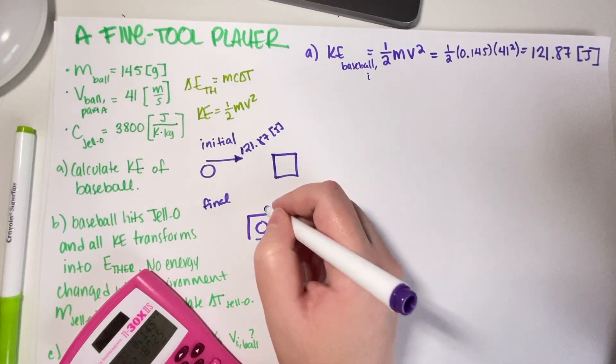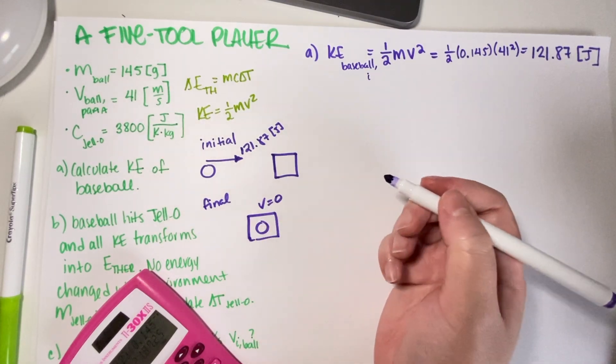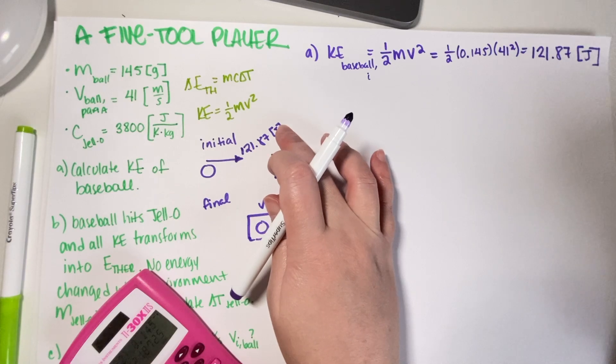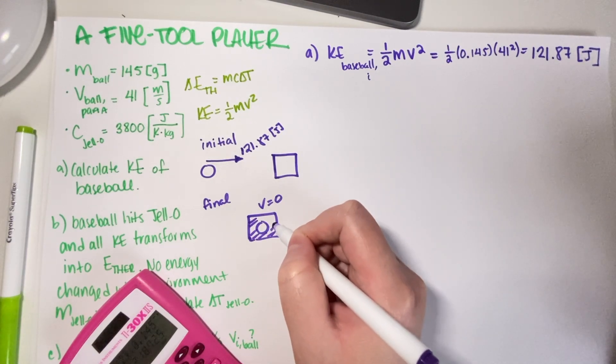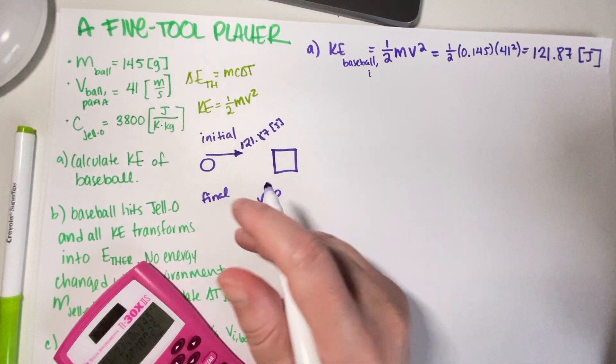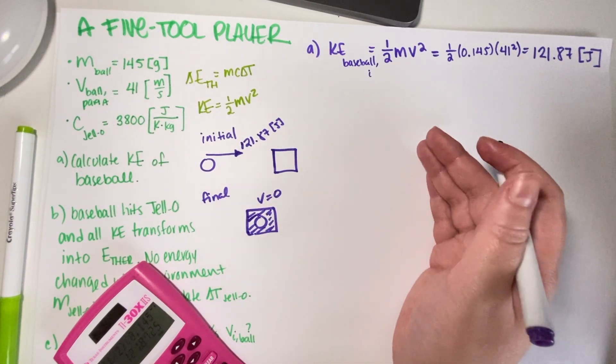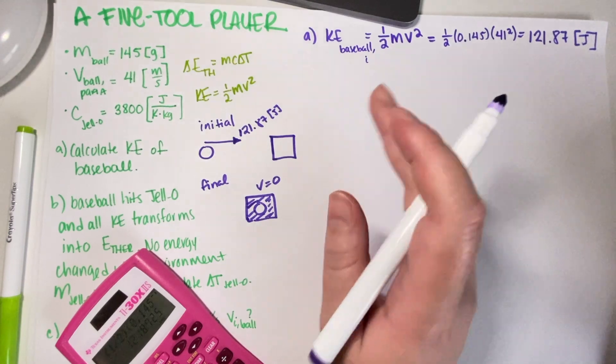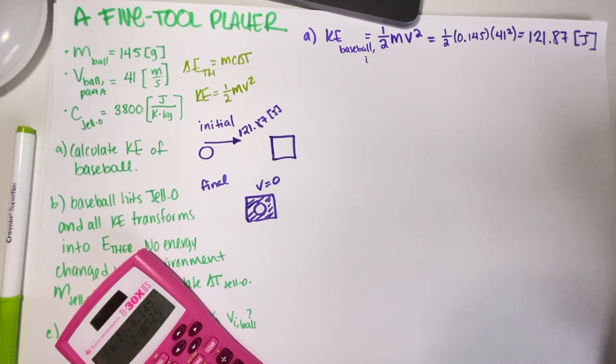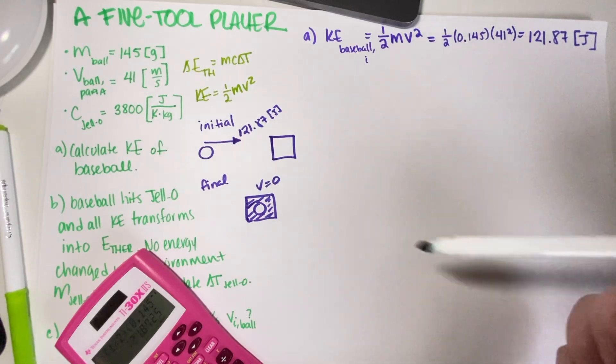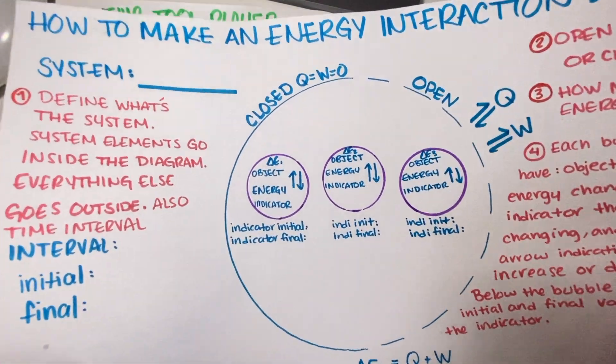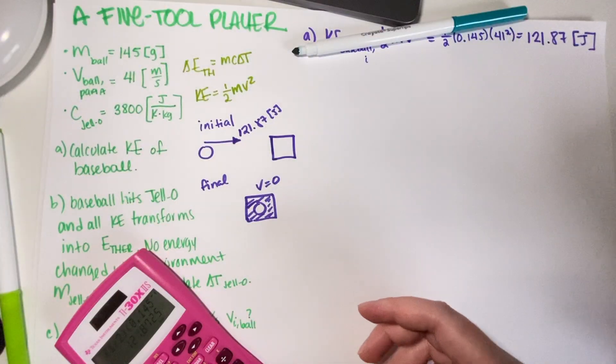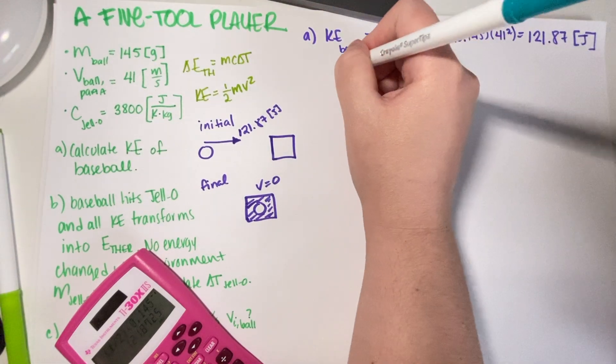And then your final is that it stops, v equals zero. Because this energy disappeared, well it changed, that means this energy got absorbed by the jello. Because the jello is not really moving and it's on ground level, that must mean that some other energy changed. In this case they're telling you it was thermal energy, so we have to figure out the change in temperature.